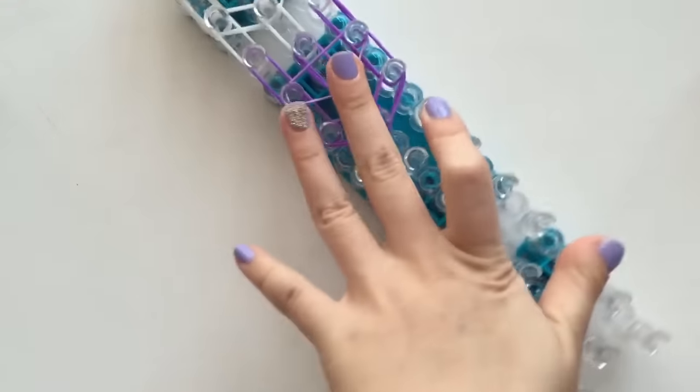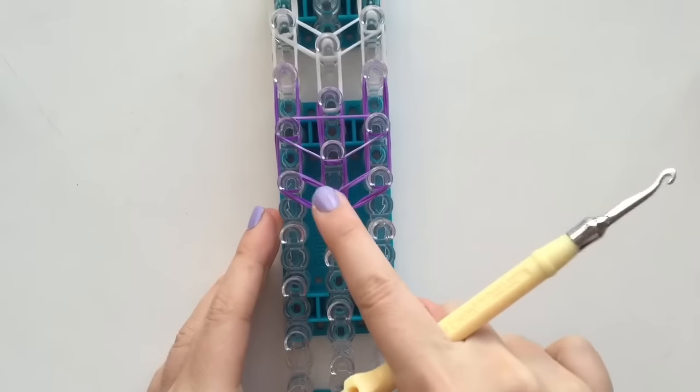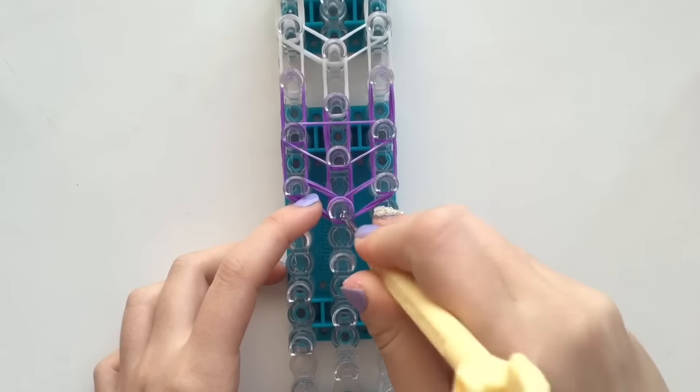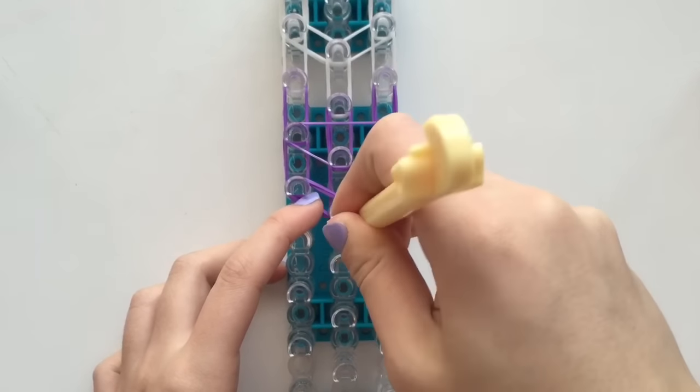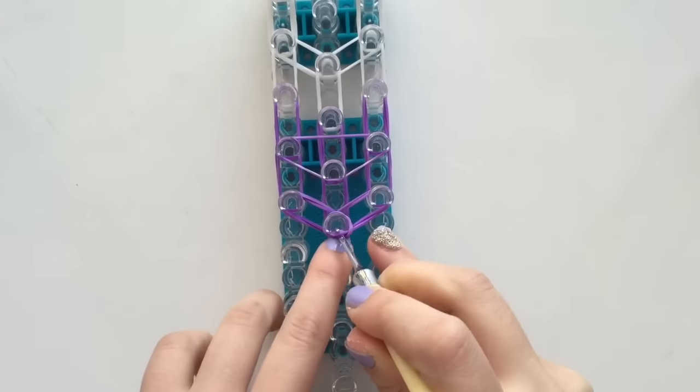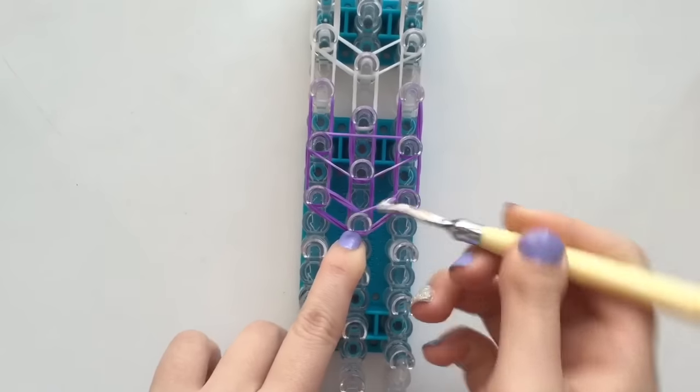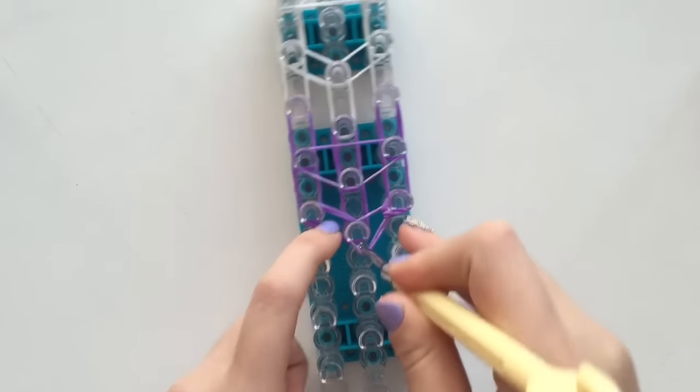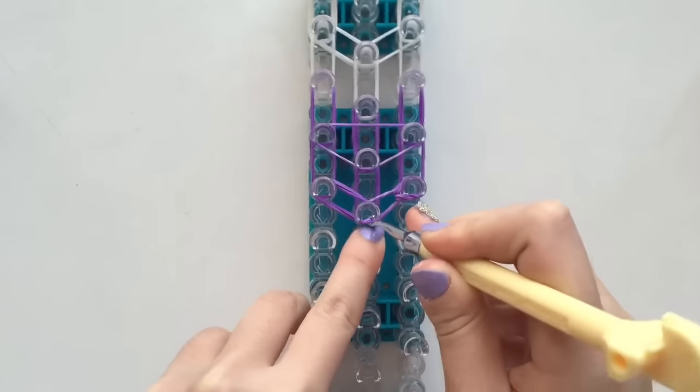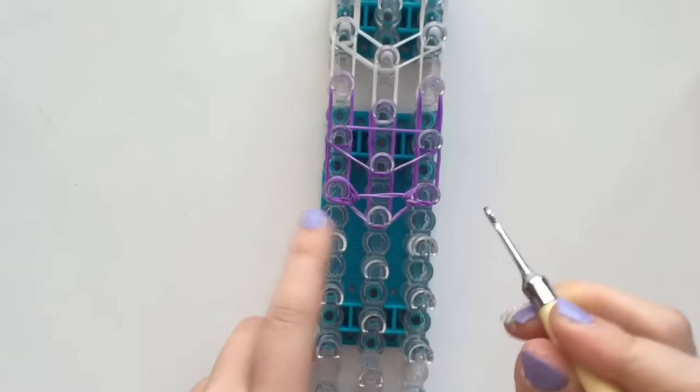Once you have that completed, you're ready to hook everything together. So turn your loom around so that the arrows point down. Okay, so begin hooking right there at the center where we put that first cap band. And of course, push back the cap band with your hook and pick up the first two rubber bands. And if you followed exactly what I did, it should go out to the right. And you'll know you've done this right because you'll see a slight teardrop shape when you place it on that peg. So, pick up the next two and it should go out to the left.